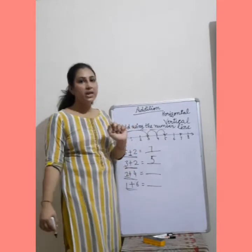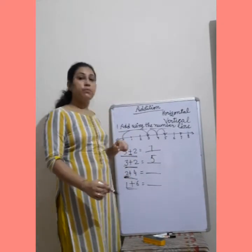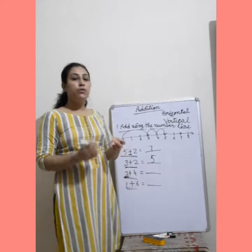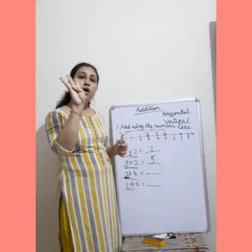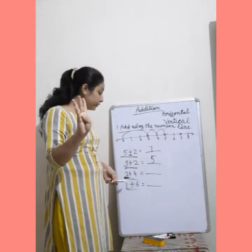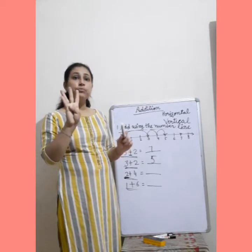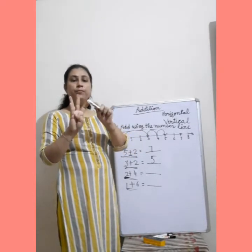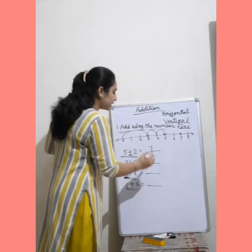अब हम second method से करेंगे. अब देखो first आपका number क्या है? 2. तो 2 को रखना है keeping in your mind. And 4 — count on your finger. 4 finger up करो. 2 को keep in your mind — means first digit को आपने mind में रखना है, और जो second digit दिया होगा उतनी finger up करनी है. We will count after 2 — 3, 4, 5, then 6. Your answer is 6, and right here 6.